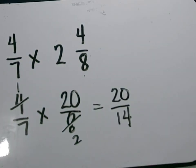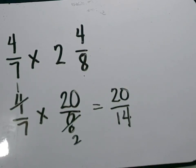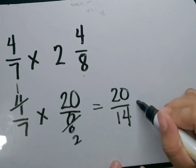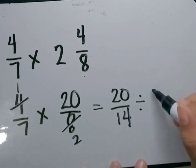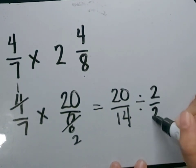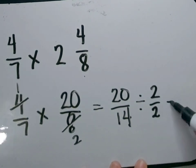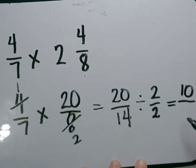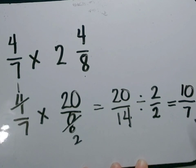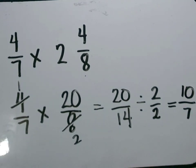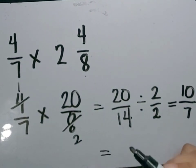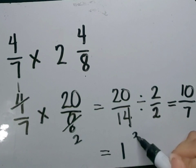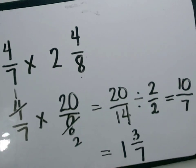Now let's simplify our answer. 20 and 14 have a GCF of 2. Let's divide 20 over 14 by 2. 20 divided by 2 is equal to 10. 14 divided by 2 is equal to 7. Our answer is 1 and 3 over 7.